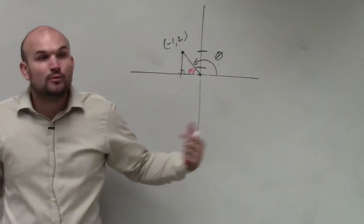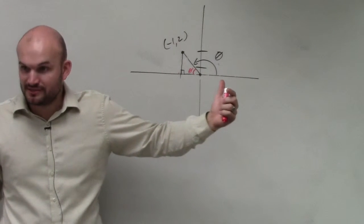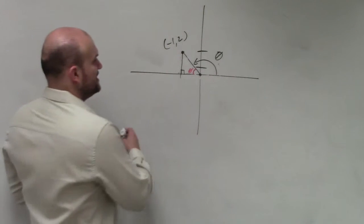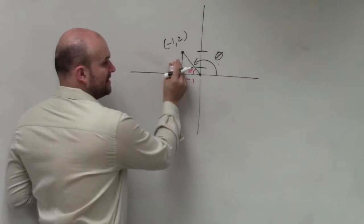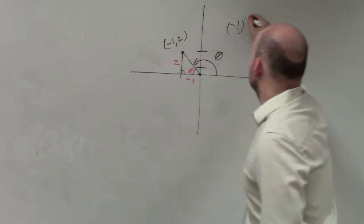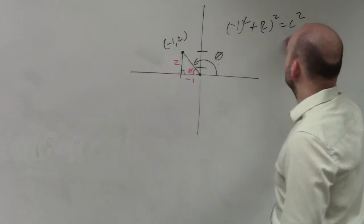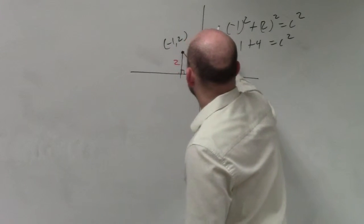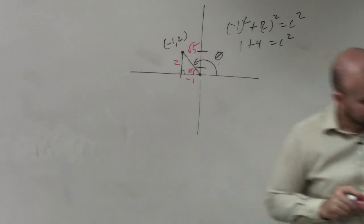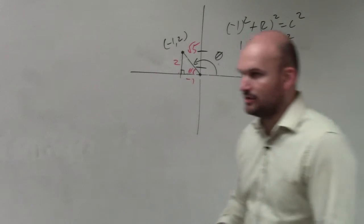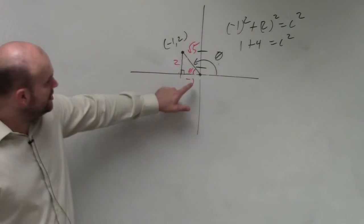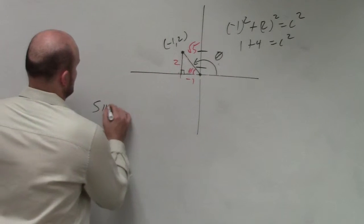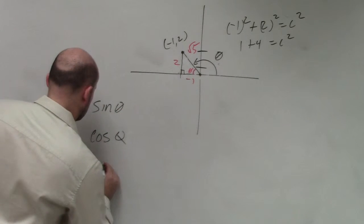Now that we've created a right triangle, we can evaluate for sine, cosine, and tangent. So if my coordinate point is negative 1, up 2, this value has to be negative 1 and this value has to be 2. I can quickly do the Pythagorean theorem: that's going to be 1 plus 4 equals c squared, so therefore this is the square root of 5. So they're asking us to evaluate the six trigonometric functions of the angle. The important thing is we know that that's negative — now we have our side lengths, so we just do sine, cosine, and tangent.